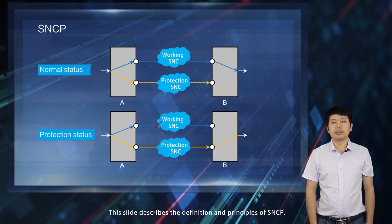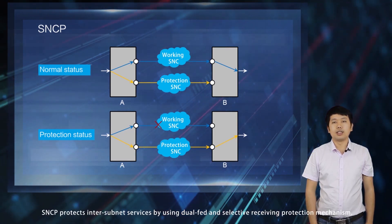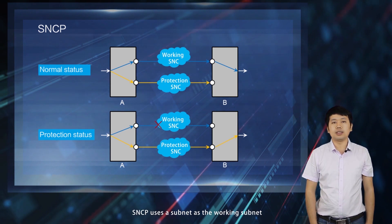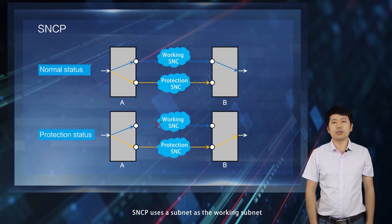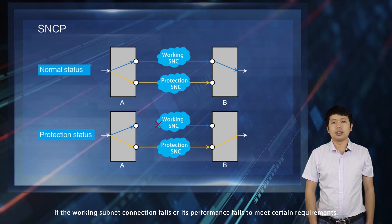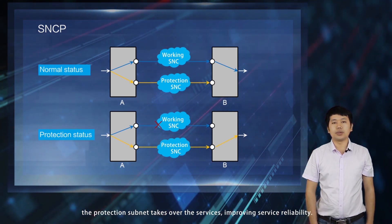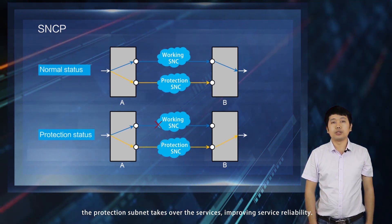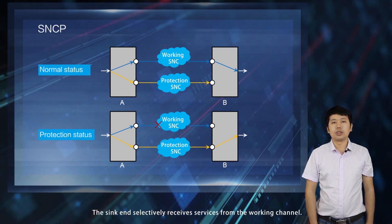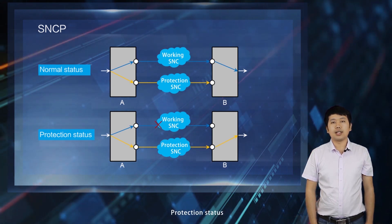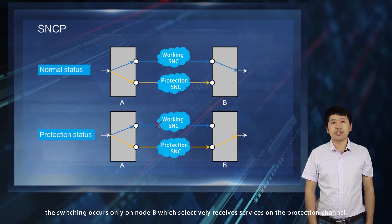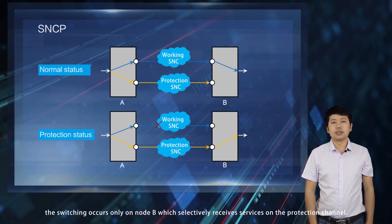This slide describes the definition and principles of SNCP. SNCP protects inter-subnet services by using a dual-fed and selective receiving protection mechanism. SNCP uses one subnet as the working subnet and another as the protection subnet. If the working subnet connection fails or its performance fails to meet certain requirements, the protection subnet takes over the services, improving service reliability. In normal status, the working and protection channels are normal, and the sink end selectively receives services from the working channel. In protection status, if the working channel transmitting services from Node A to Node B is faulty, switching occurs only on Node B, which selectively receives services on the protection channel.